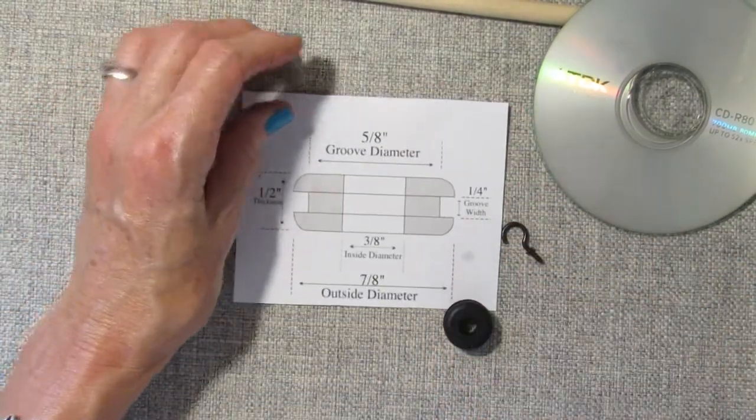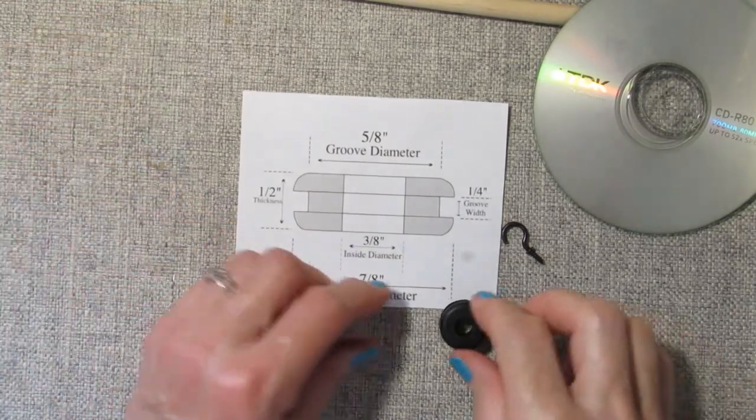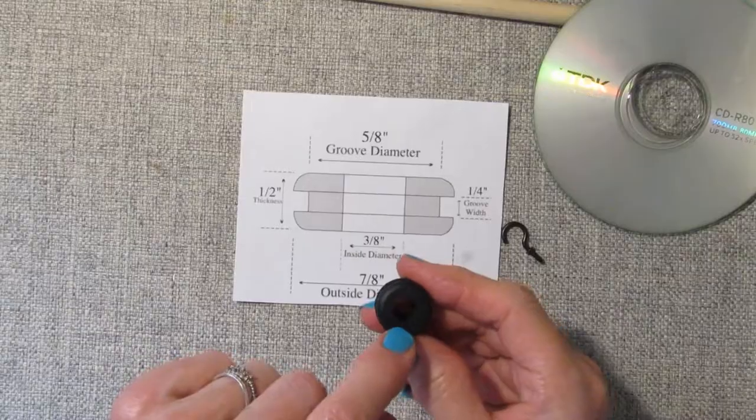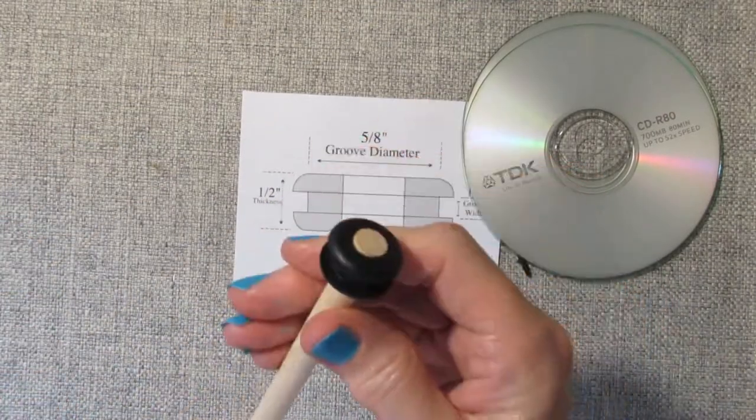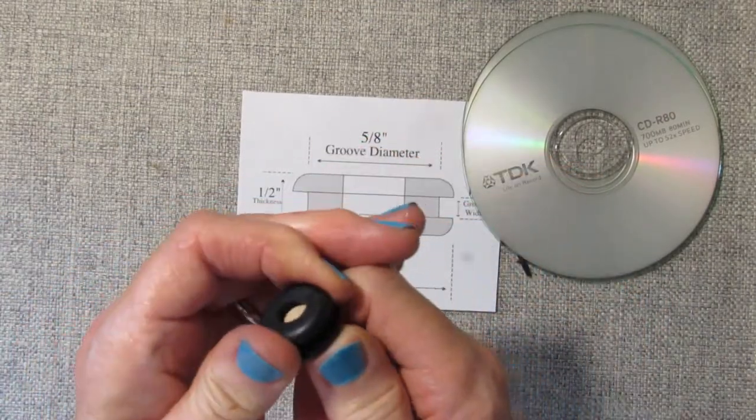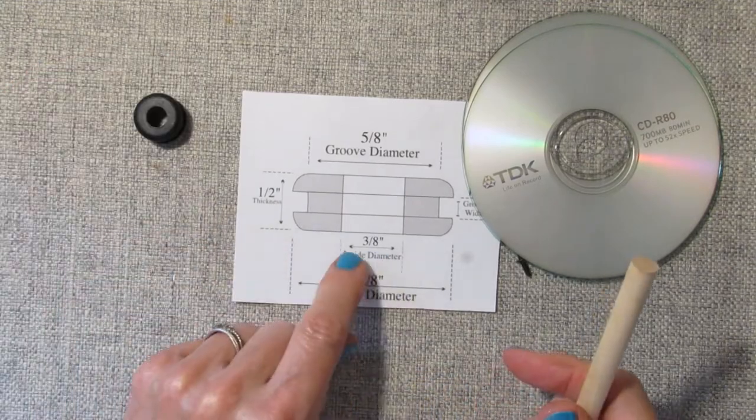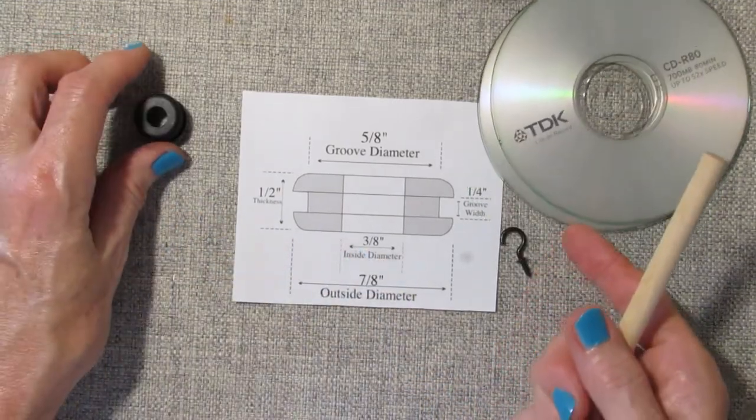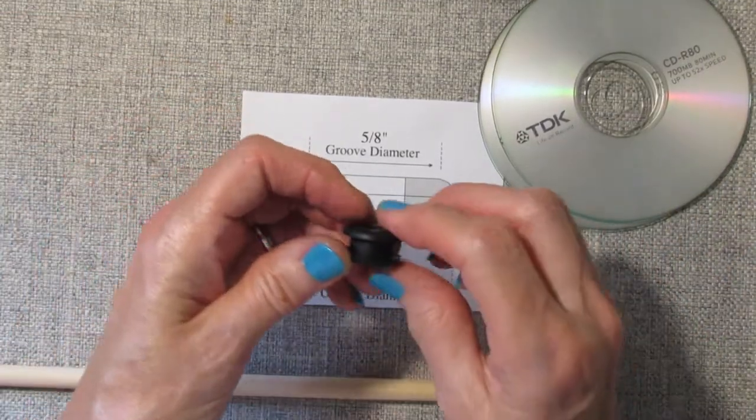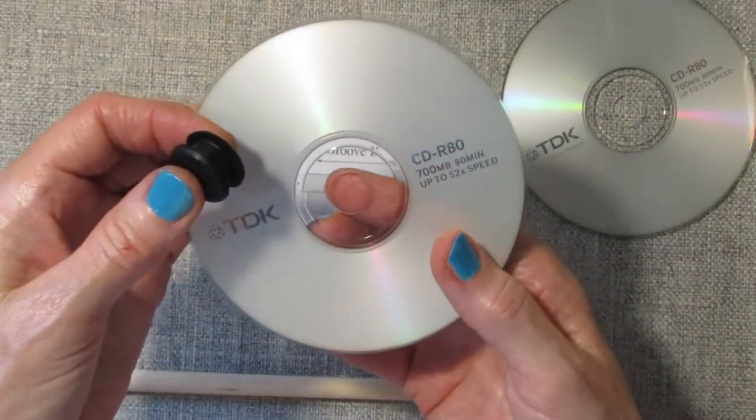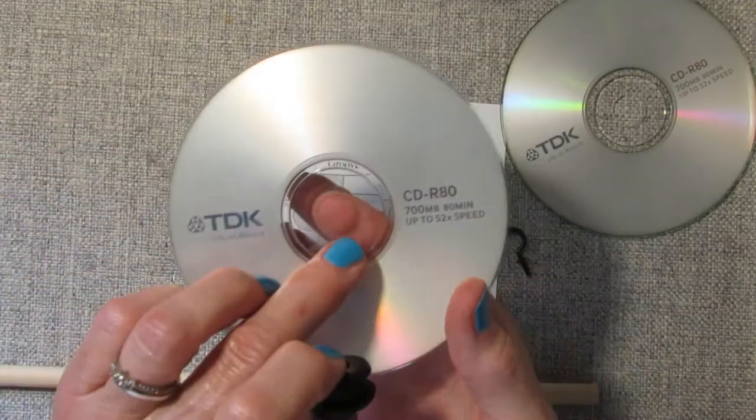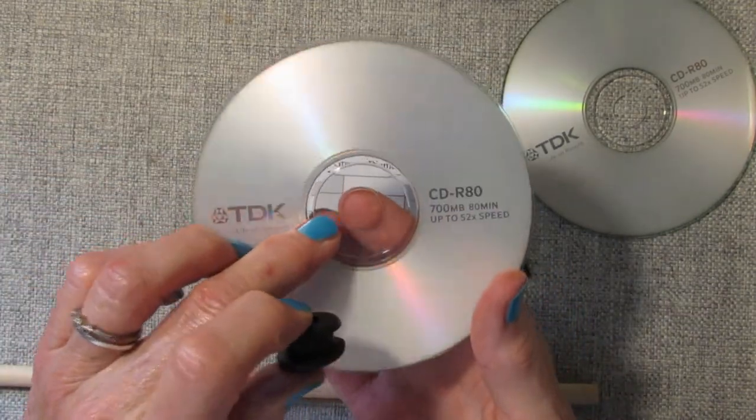Now, because you have the grommet, you need the interior hole to fit the 3/8 inch dowel. So the interior hole needs to be 3/8 inch. The other measurement that you need to worry about when you're buying them is that the hole on the CD is 5/8 inch.